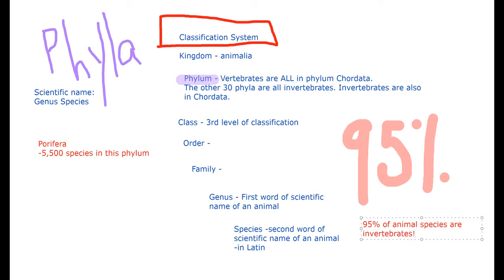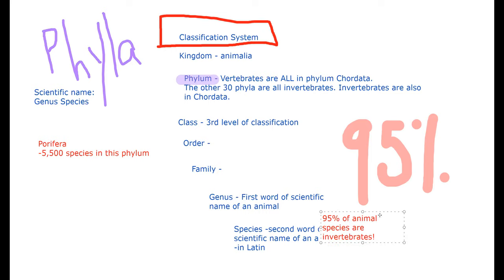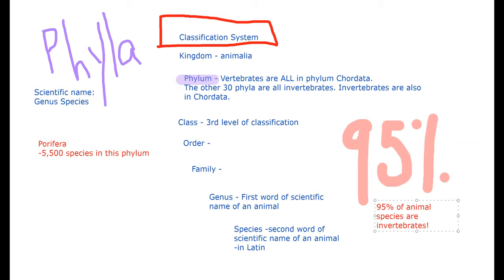The first phylum we are going to learn about is called Porifera. Porifera is pretty neat because there are 5,500 species in this phylum. Fun fact: 95 percent of all animal species are invertebrates — pretty exciting given how many there are for us to learn about. Make sure you have that in your notes.